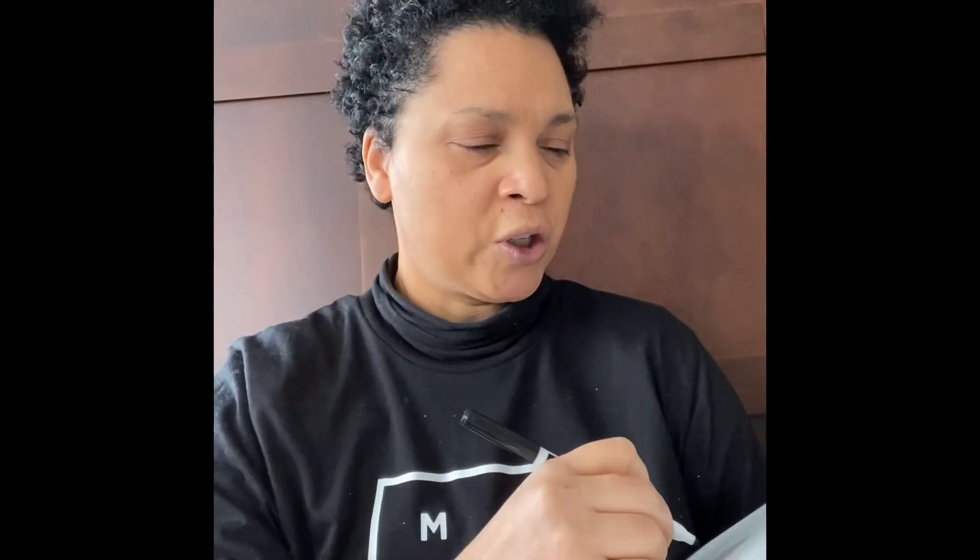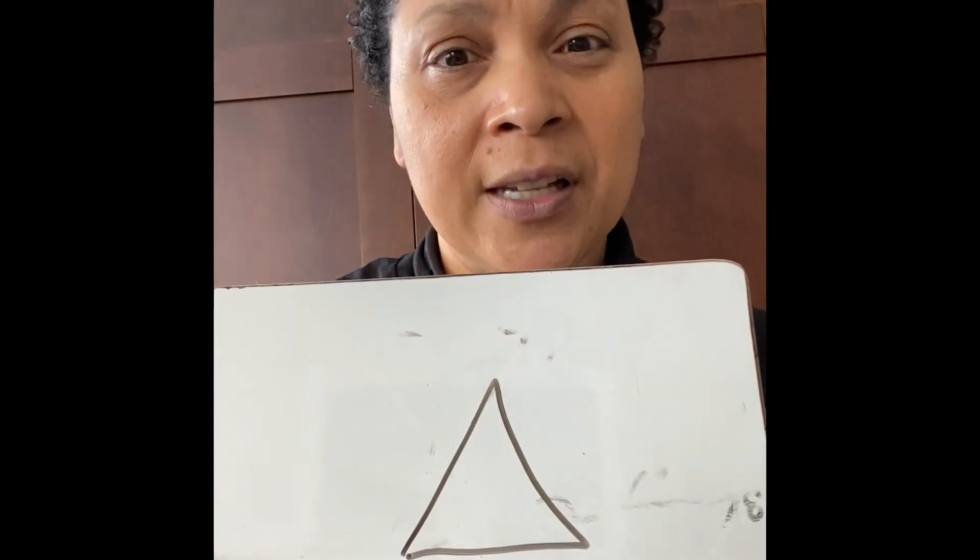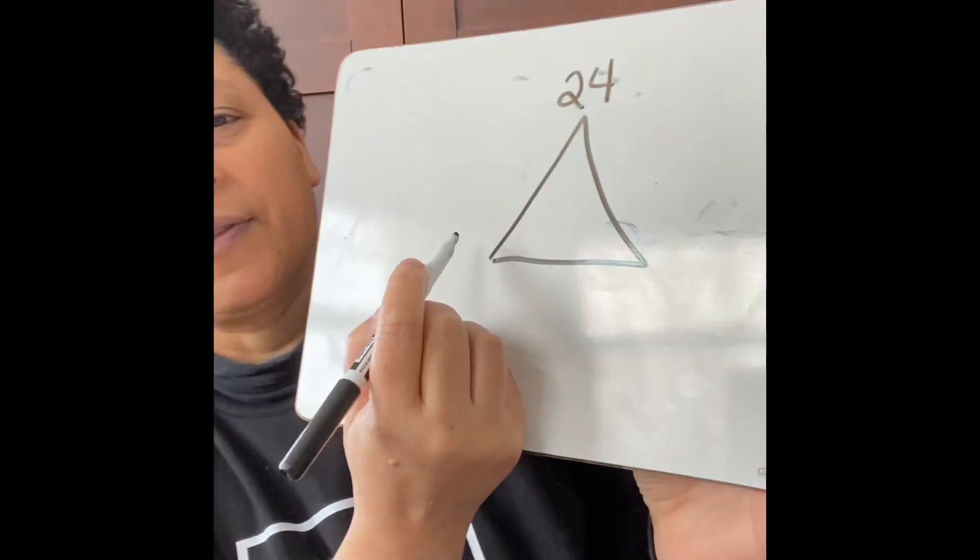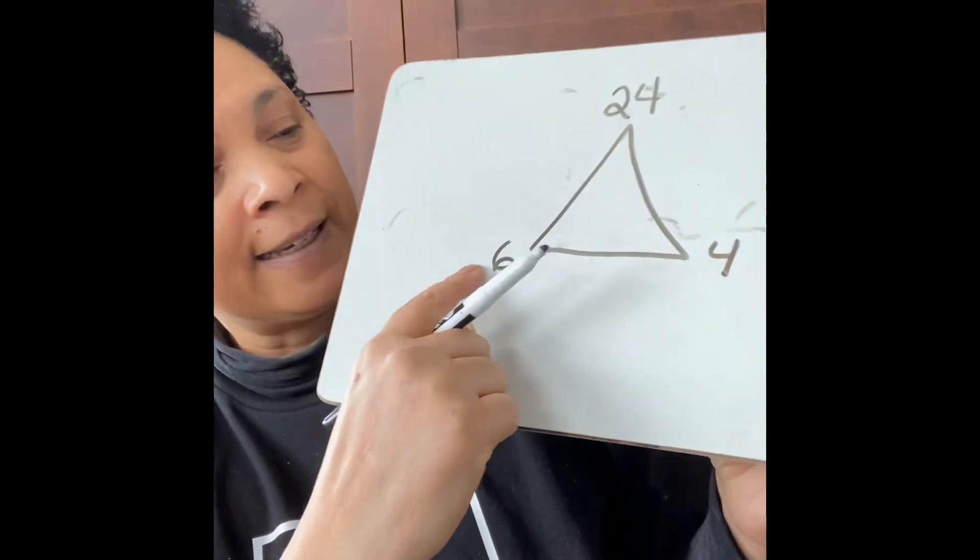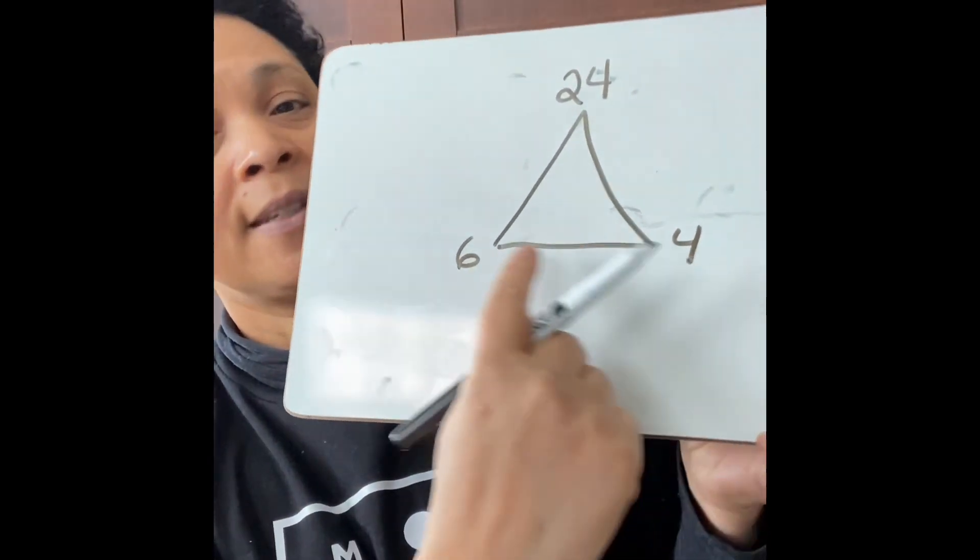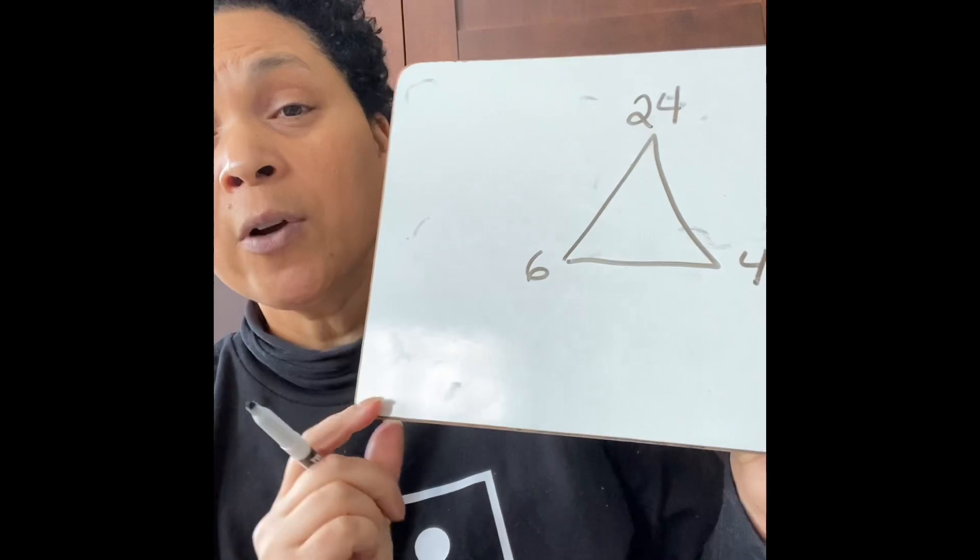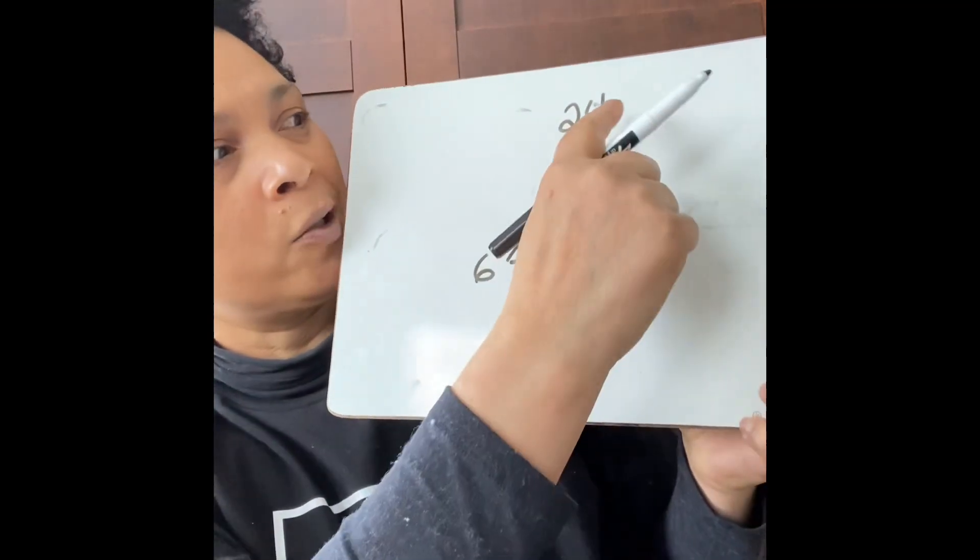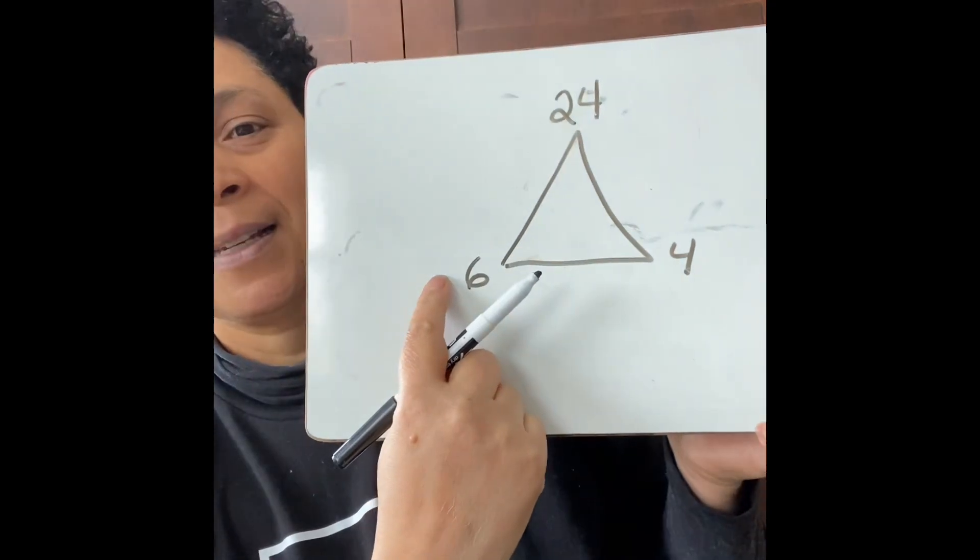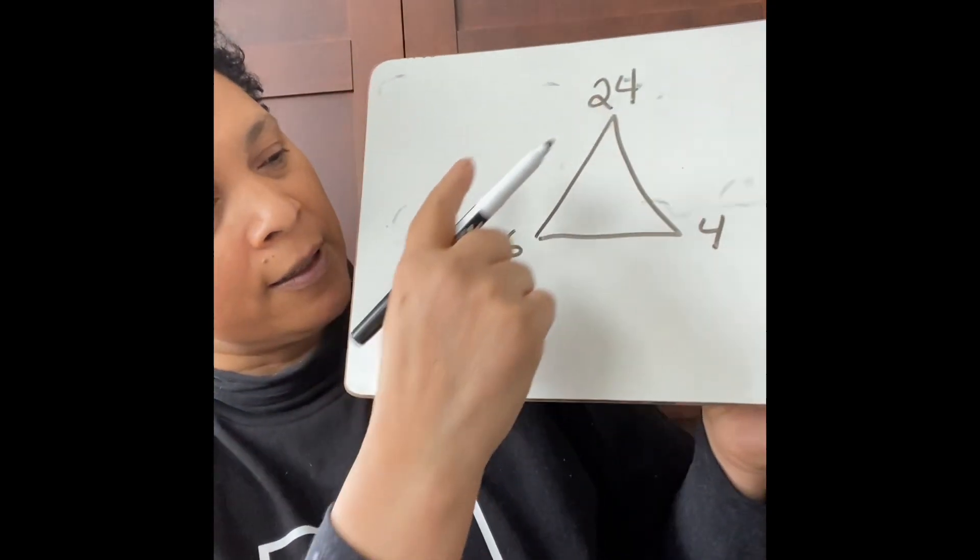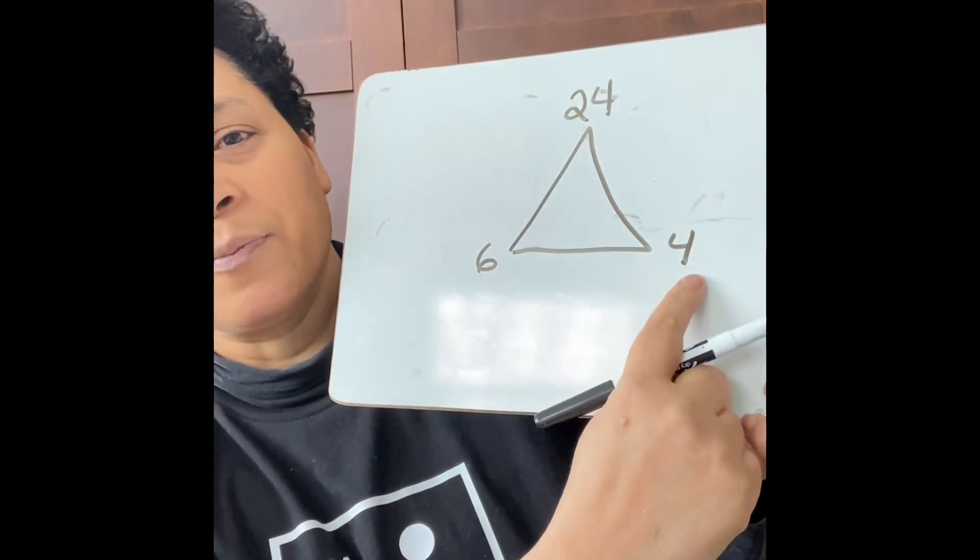So if I have 24 and I have a 6 and a 4 here, not only does it help me with my multiplication - 6 times 4 is 24 - but I know that 24 divided by 4 is going to give me 6, and 24 divided by 6 is going to give me 4.